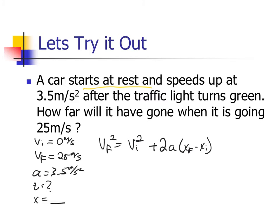I can also probably infer that the initial point would be zero meters down the track or down the road. Therefore, leaving me with just the x of f or just x to solve for. I can then add my knowns into my equation here, giving me 25 squared is equal to zero squared plus 2 times 3.5 times x.